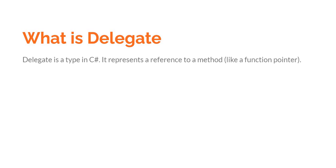First let's discuss what is Delegate. Delegate is a type in C-Sharp. It represents a reference to a method, like a function pointer. A lot of places it will come up as Delegate is a function pointer. But in C-Sharp, Delegate is essentially a type which represents a reference to a particular method. That's why sometimes it is called a function pointer, because it points to a function.